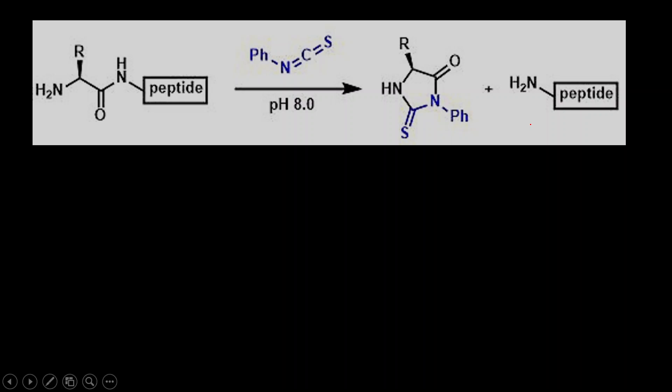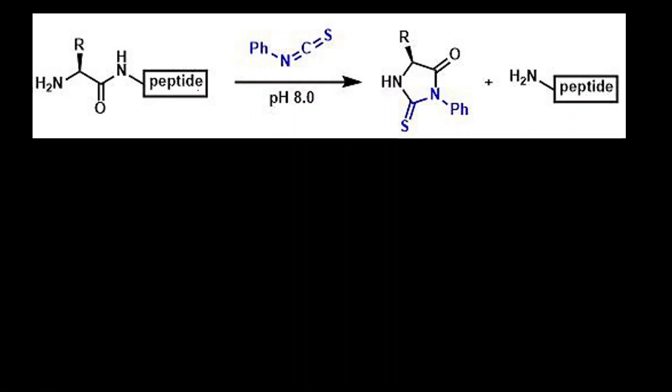So now let us see the general reaction. This is a general structure of the peptide. This is the N terminus. Nitrogen has a lone pair that will attack the electron deficient carbon atom and this will open up and then there will be intramolecular cyclization and the final product we get is this. In this what is R group? R group is the side chain of the amino acid.